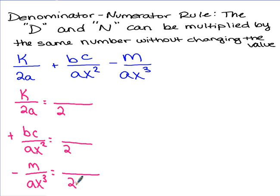So we look at each variable term. Our first fraction has an a, the second one has an a, the third one has an a. So a is going to be part of our denominator term.